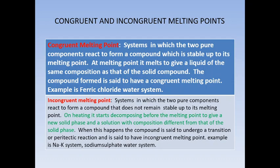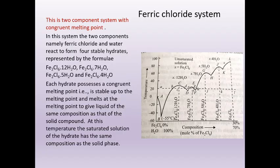In incongruent melting point systems, the two components react to form a compound, but the compound formed does not remain stable up to its melting point. When heated, it decomposes before the melting point to give a new solid phase and a solution with a composition different from that of the solid phase. The compound is said to undergo a transition or peritectic reaction and is said to have an incongruent melting point. Examples are the sodium-potassium system and sodium sulfate-water system.